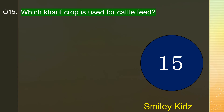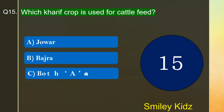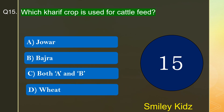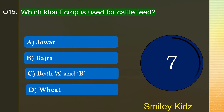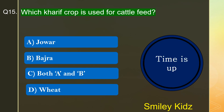Question number 15. Which kharif crop is used for cattle feed? The options are A. Jowar, B. Bajra, C. Both A and B, or D. Wheat. Your time starts now. The right answer is option C, Both A and B. Jowar and Bajra are used for cattle feed.